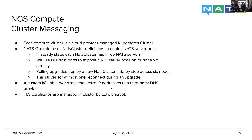Within each cluster, we have a custom Kubernetes observer that syncs the IP addresses of the active NATS servers to our third-party DNS provider. From the top down, you have the single connect address; based on geolocation data we provide, it resolves to a specific cluster. From within the cluster, we keep those IP addresses in sync. Additionally, we have TLS certificates managed in-cluster by Let's Encrypt.